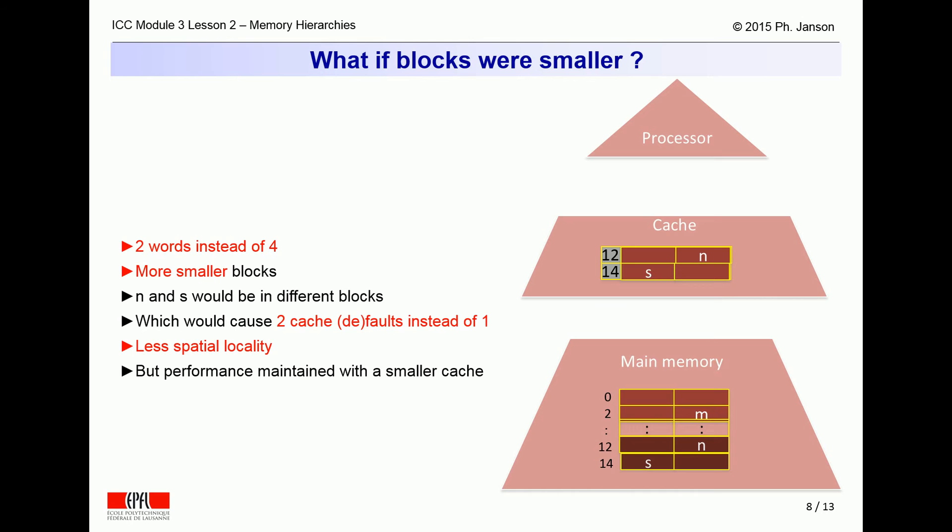Imagine for a second that blocks would be smaller, containing only two words instead of four. The same size cache would then contain more blocks, but they would be smaller. Starting the integer sequence addition program would thus certainly cause two cache faults, instead of just one, to load the same variables. Spatial locality would thus be worse, although performance could be maintained with a smaller and thus cheaper cache.